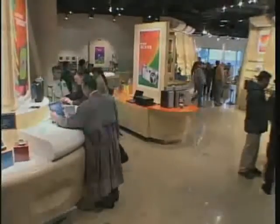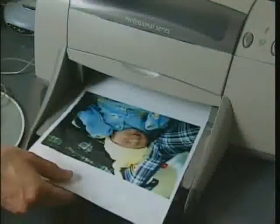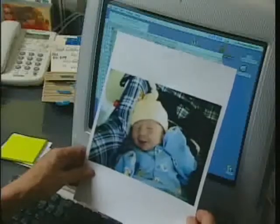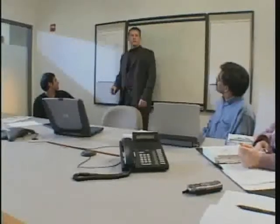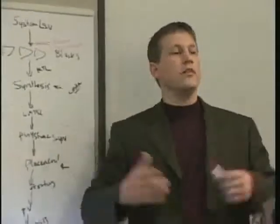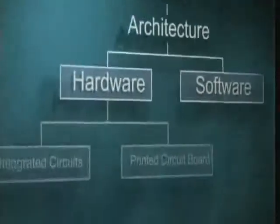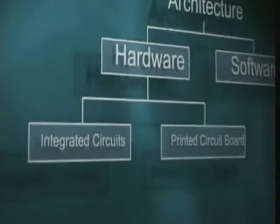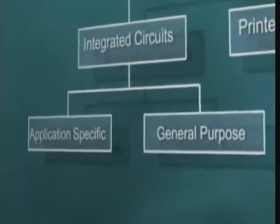To understand the part EDA plays, let's see how designers go about transforming an idea into an actual product. System architects first decide what the product will be and how it will function in the most abstract sense. This is a telecommunications chip — it's going to be running on batteries. EDA software helps them decide which functions to implement as either software or hardware. They determine the number of circuit boards needed and the type of integrated circuits that must be used.